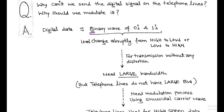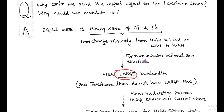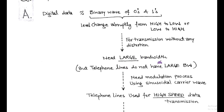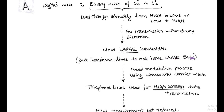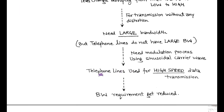This is because digital data consists of binary waves of 0s and 1s, and there is an abrupt change in levels from high to low or from low to high. This change in level requires a large bandwidth in order to transmit without any distortion. But with telephone lines, this requirement is not fulfilled as the bandwidth of telephone lines is very small. Hence, there is a need for modulation using a high-frequency sinusoidal carrier wave, after which low-bandwidth telephone lines can be used for high-speed data transmission.